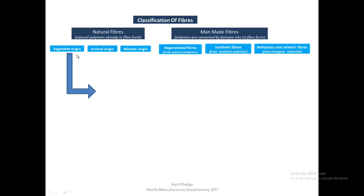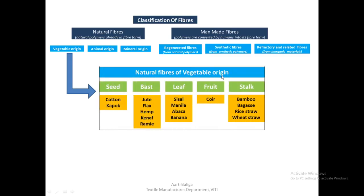Natural fibers of vegetable origin can be sub-classified into five types: fibers from the seed, bast, leaf, fruit, or stalk of the plant. From the seed: cotton and kapok. From the bast: jute, flax, hemp, kenaf, and ramie. From the leaf: sisal, manila, abaca, or banana. From the fruit: coir. From the stalk: bamboo, bagasse, rice straw, and wheat straw.